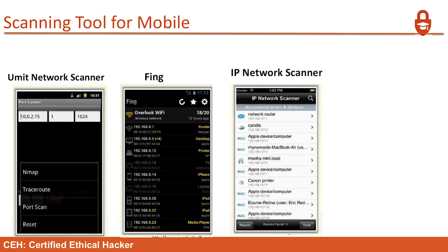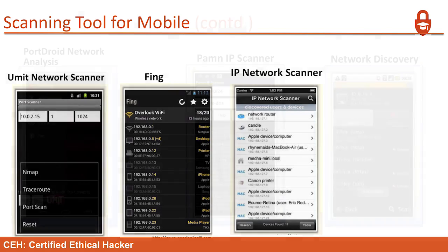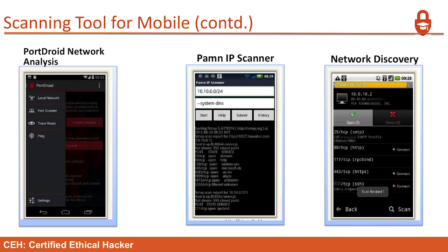Scanning tools for mobile. Don't discount it — it's a huge space nowadays. Keep in mind that phones can bypass all of that border gear that you've got. You've got millions of dollars in appliances on your egress points, and a mobile device can go right around it and exfiltrate an entire database and you have no idea. So you want to have some control over your mobile network. Tools include the U-MIT network scanner, FING IP network scanner, Port Droid network analysis, PIN IP scanner, and network discovery.